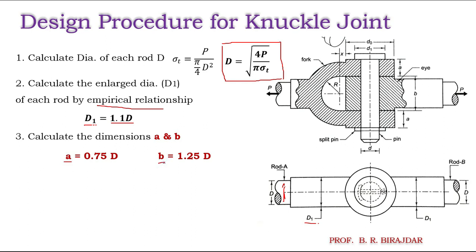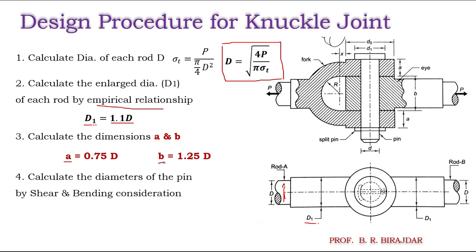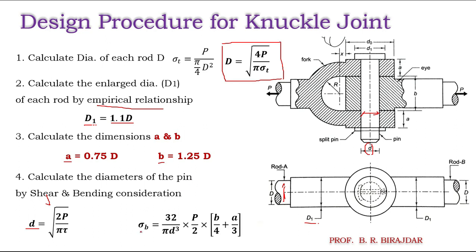Next, we have to calculate the diameter of the pin — that is small d. We consider failure either by shear or by bending. Using the shear equation: d is equal to the square root of (2P divided by π·τ), where P is the load and τ is the allowable shear stress for the pin.